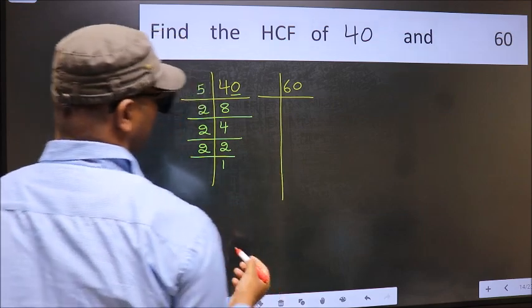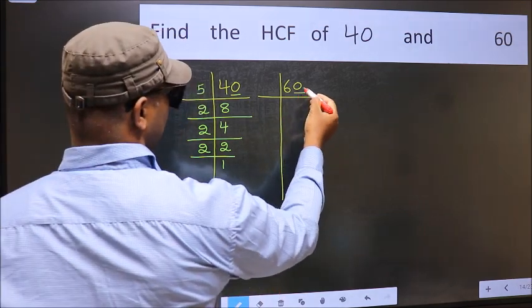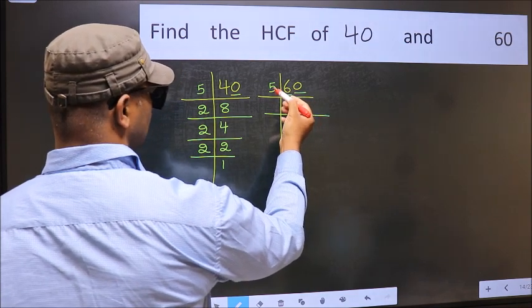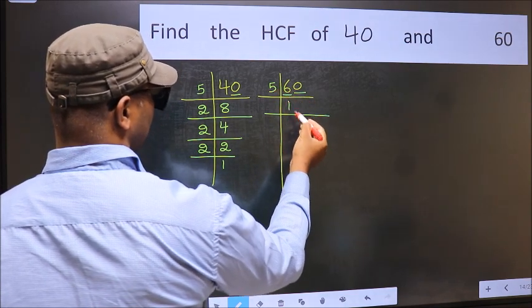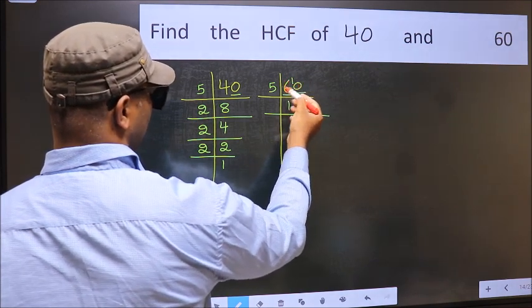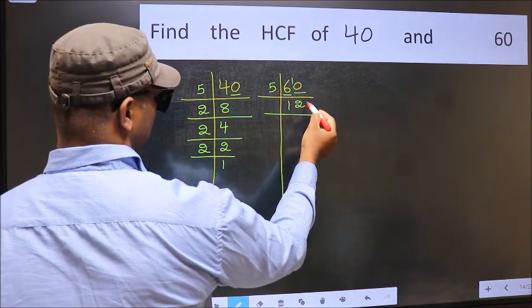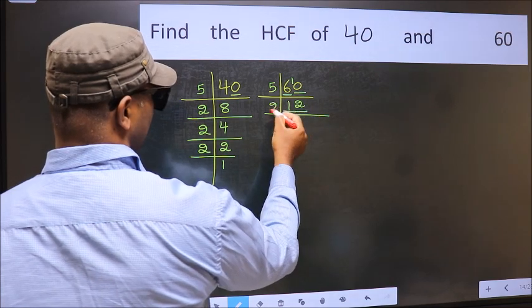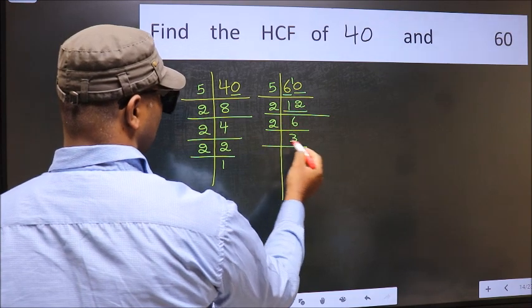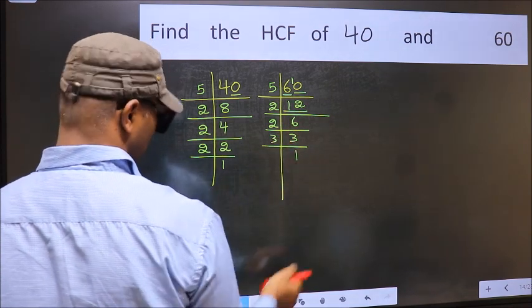Now the other number. Last digit is 0, so take 5. First number is 6. A number close to 6 in the 5 table is 5 times 1 is 5. 6 minus 5 is 1, 1 carried forward makes 10. When do we get 10 in the 5 table? 5 times 2 is 10. Now 12 is 2 times 6 is 12. 6 is 2 times 3 is 6. 3 is a prime number, so 3 times 1 is 3.